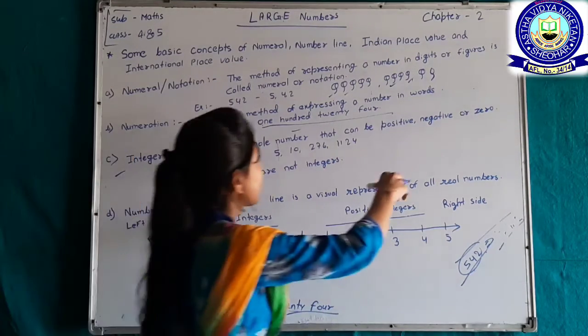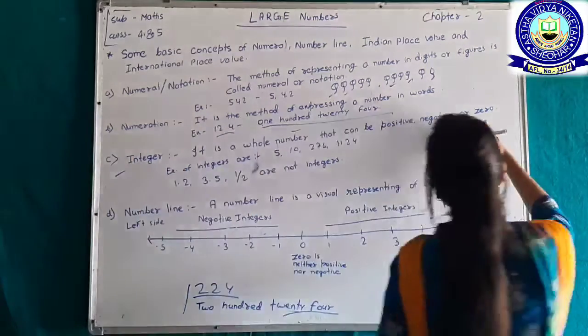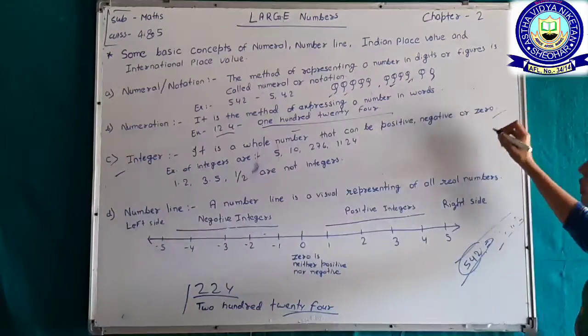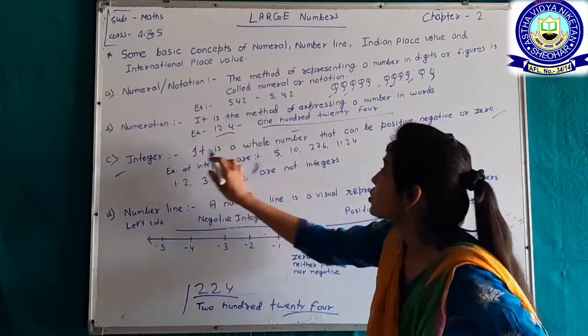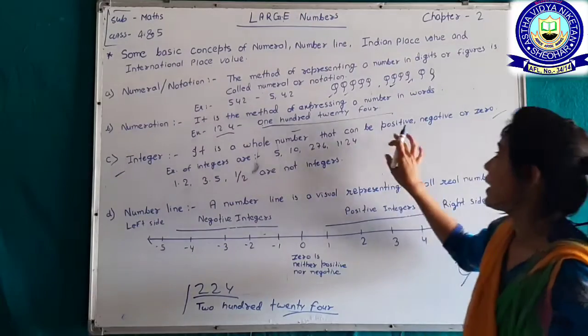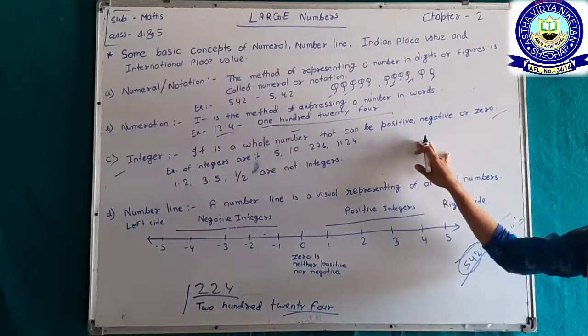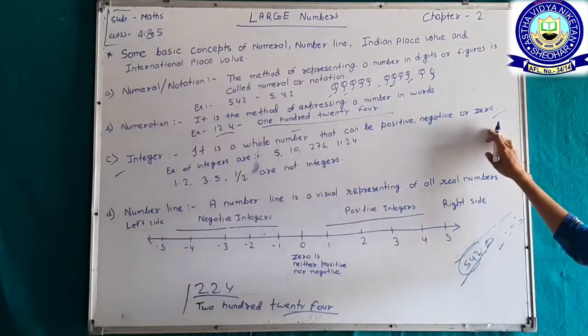And next, integer. An integer is a whole number that can be positive, negative, or zero.